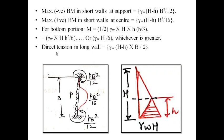The direct tension in the long wall for Case 2 is given as γw × (H − H') × B / 2. This is exactly similar to Case 1. The pressure at (H − H') level acts on the short walls of width B, and since there are two long walls, it is divided by half — giving γw × (H − H') × B / 2.